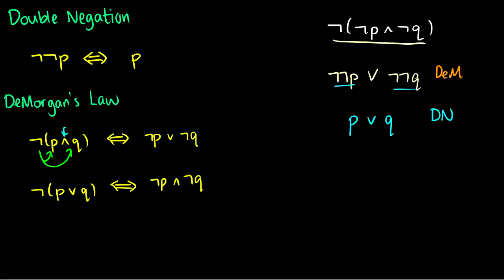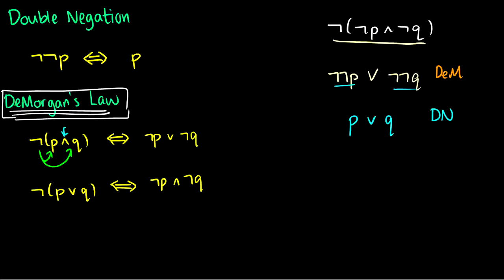The most important law out of the four so far is definitely De Morgan's law. It is used everywhere — in set theory, in propositional logic, and in Boolean logic. If you're going to remember one thing from this entire video, remember De Morgan's law.